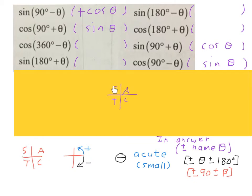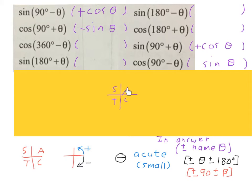For cos(90 plus theta): the name changes to sine. Start at north, go 90 plus an acute angle — we are in the second quadrant where S is positive. But the original ratio was cosine, and cosine is not positive in the second quadrant, so we put a negative: negative sin(theta). For sin(90 plus theta): name changes to cos theta. Check the quadrant — second quadrant, S is positive, so we put a plus: positive cos(theta). For cos(90 minus theta): name changes to sine. Go to 90 minus an acute angle — first quadrant, all positive, so positive sin(theta).